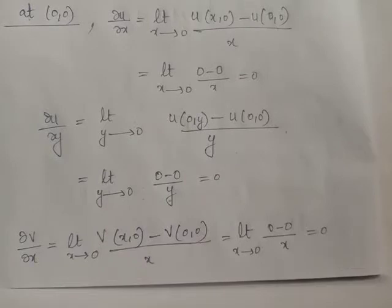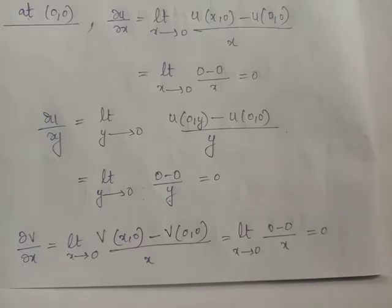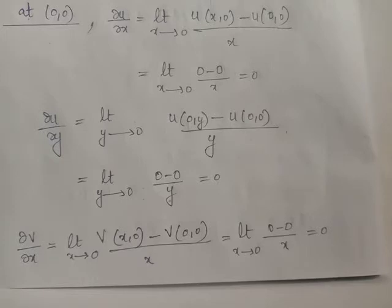We evaluate all four partial derivatives at (0,0) to check whether CR equations are satisfied at the origin. To evaluate ∂u/∂x, we keep y constant at y = 0. By the limiting definition, ∂u/∂x = limit as x tends to 0 of [u(x,0) minus u(0,0)] divided by x.